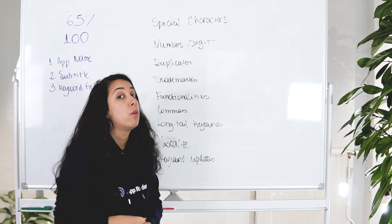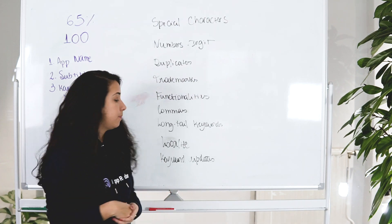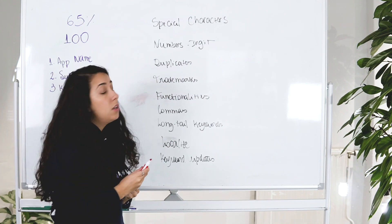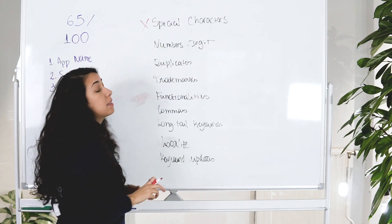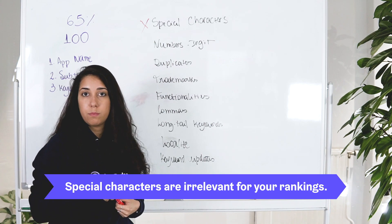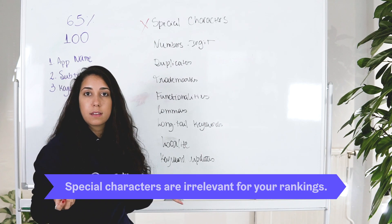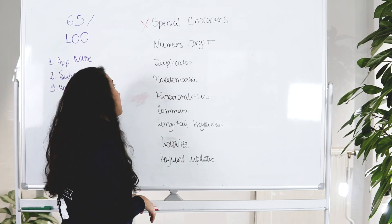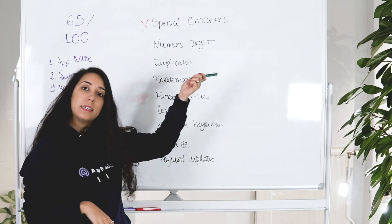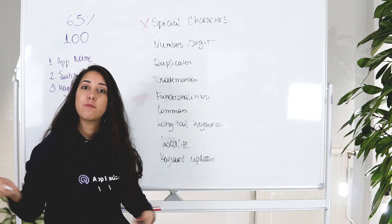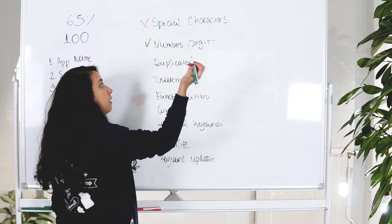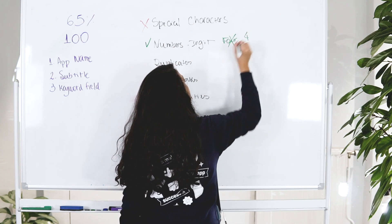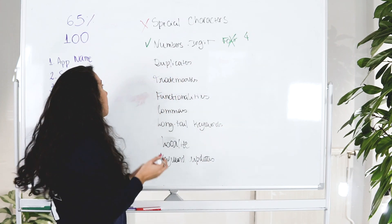We have a list of dos and don'ts about the keyword field. Special characters are a don't — they don't count for your rankings and just eat up your 100 characters, so you have no space for real keywords. Regarding numbers, always write digits because you save more space for keywords. So instead of writing 'four', write the digit 4.